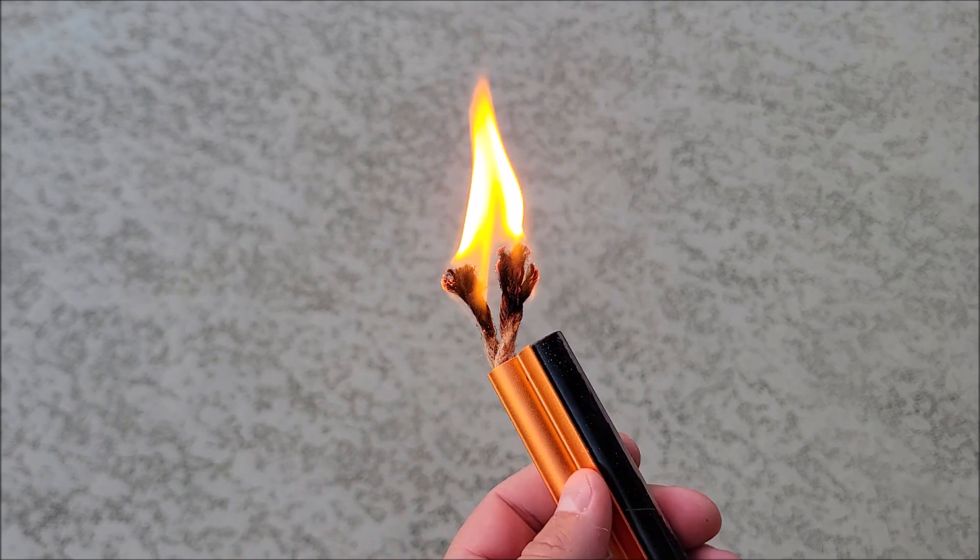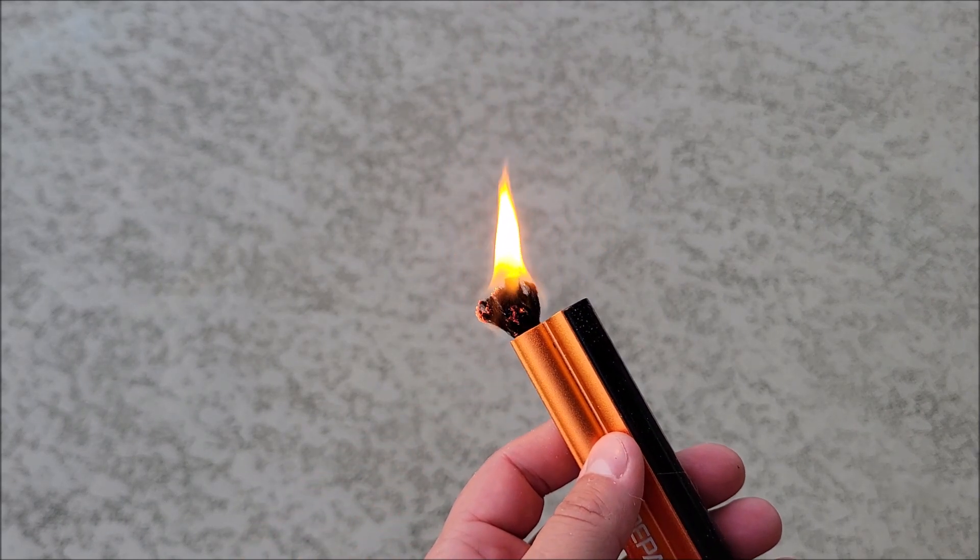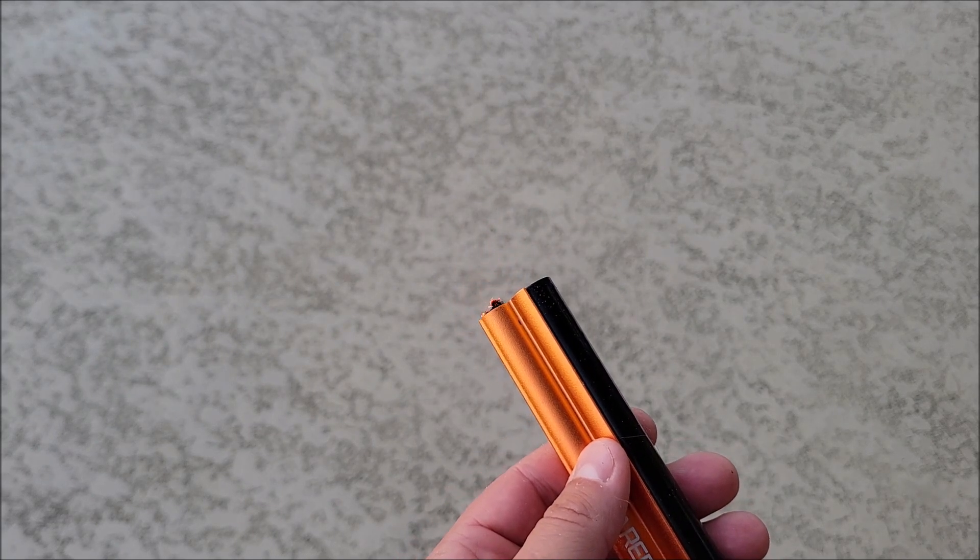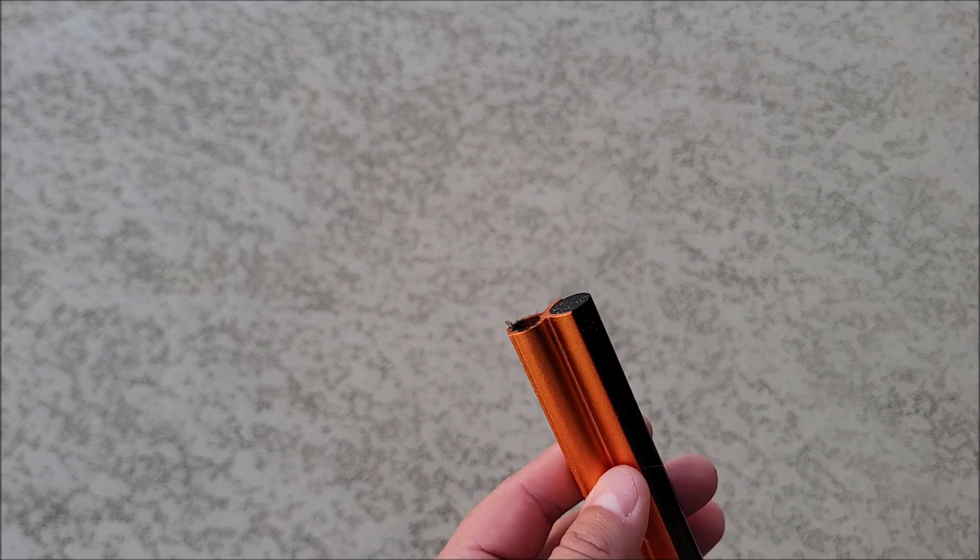Then to control it you can pull this in if you want to make a smaller flame, get a little more precise, and then to get rid of the fire you just pull it into the tube. Basically kills it out. Perfect little camping tool.